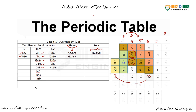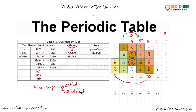These materials offer us a wide range of optical and electrical properties, so we have a lot to choose from according to our application. This is one of the main reasons we prefer semiconductor materials in electronic circuits.